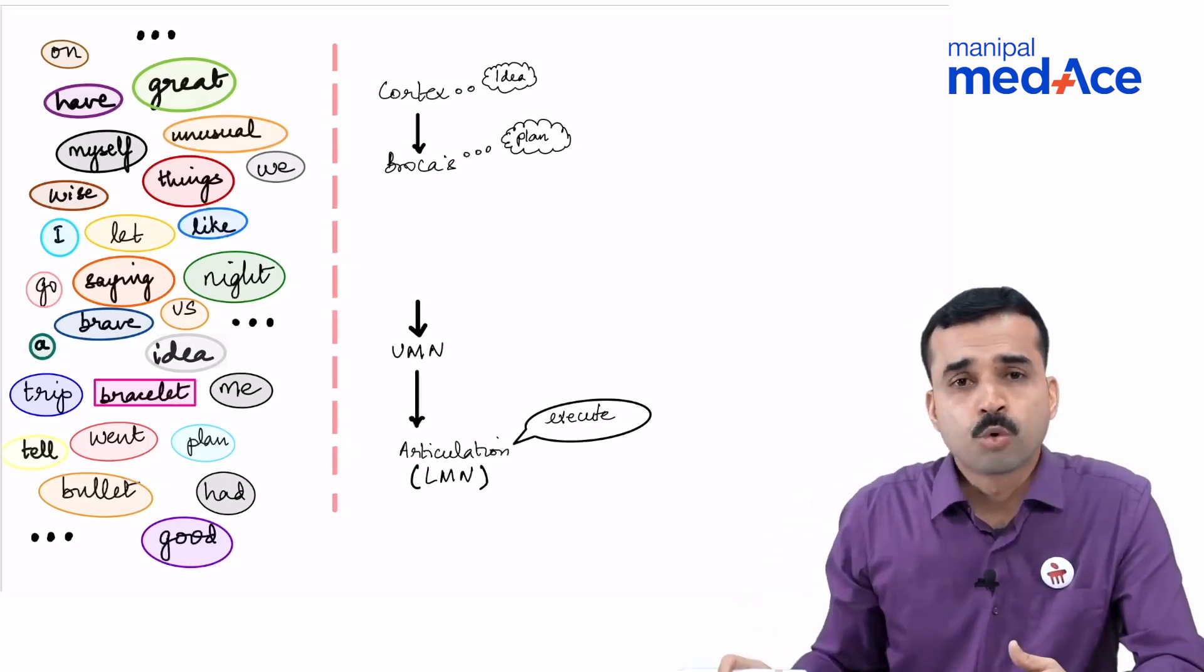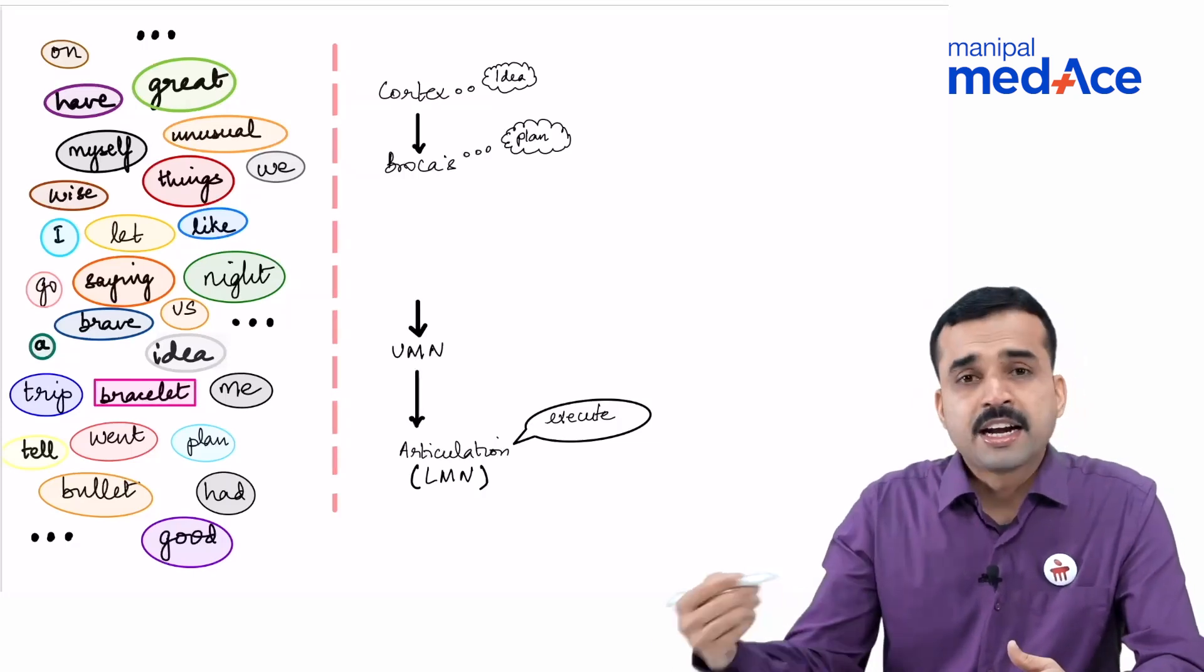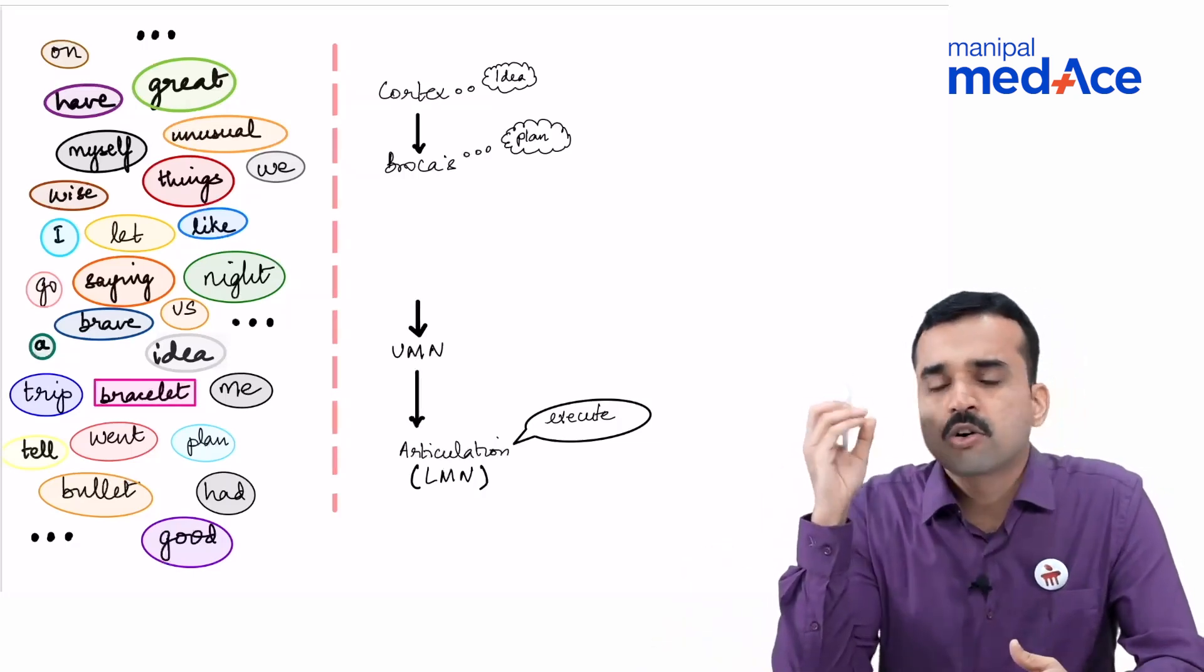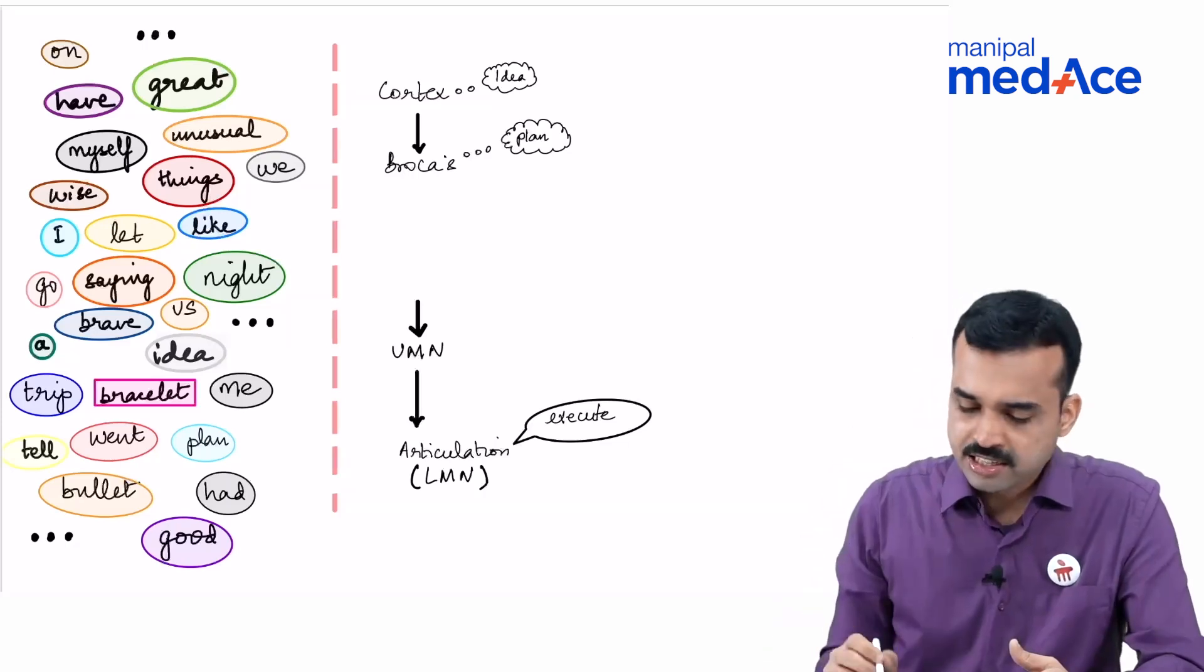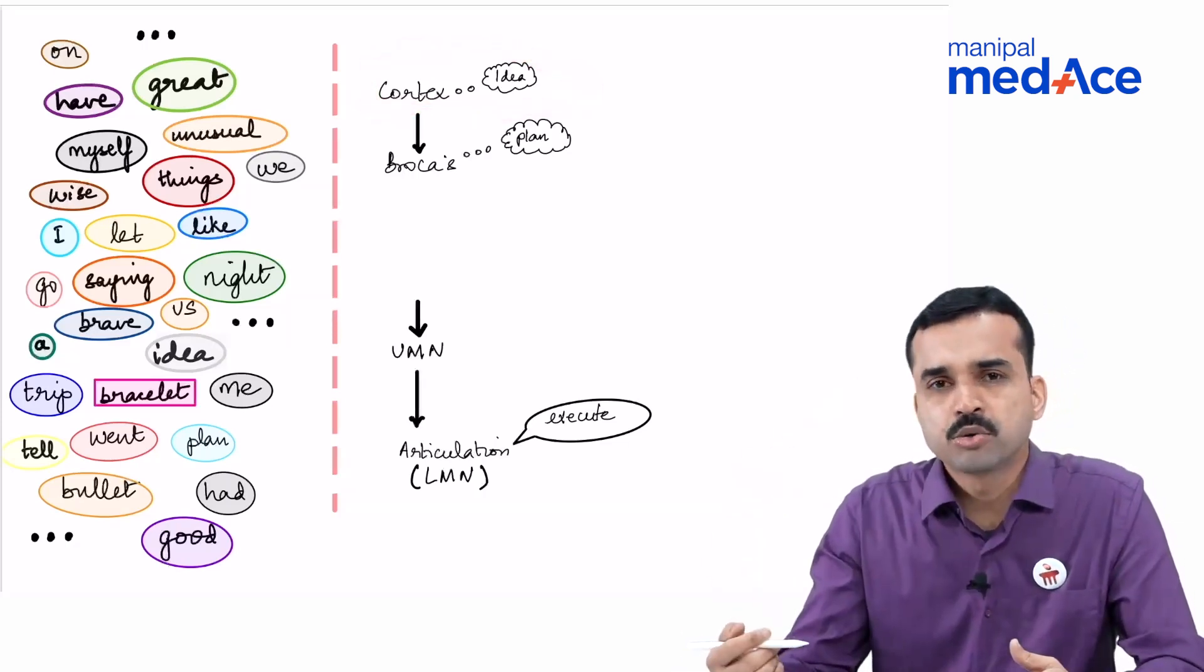Let us learn about motor aphasia now. In terms of ideas getting generated, it is a complex network of neuronal tissues which generate these ideas within the cortex. There are these higher centers which are able to develop these ideas.